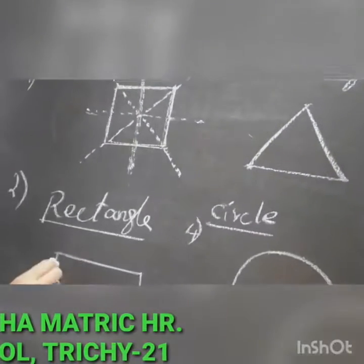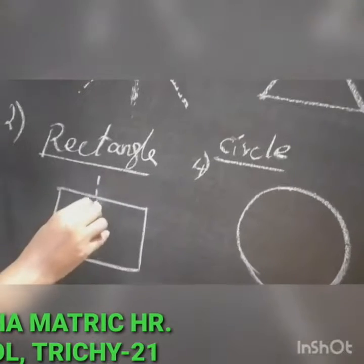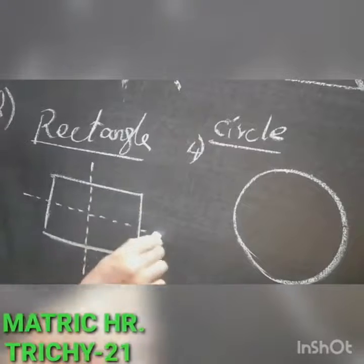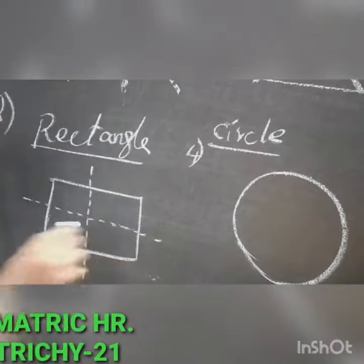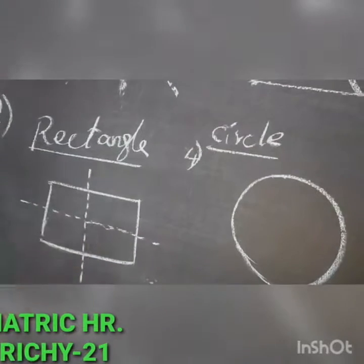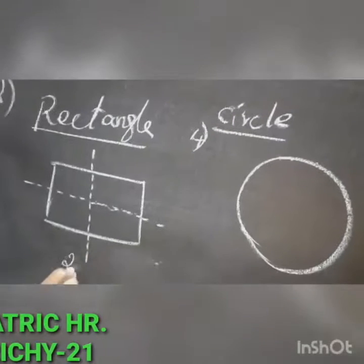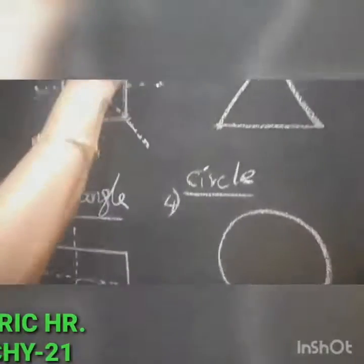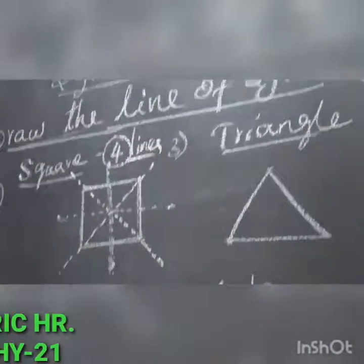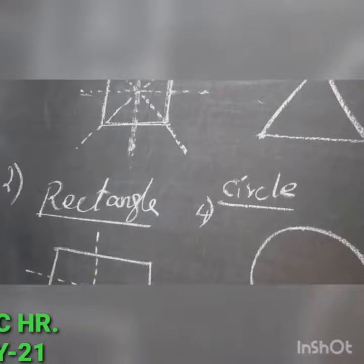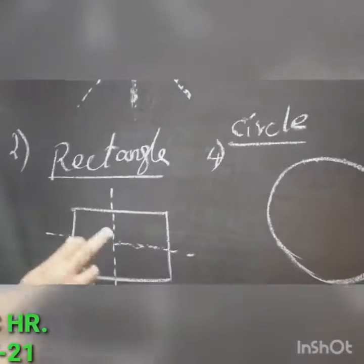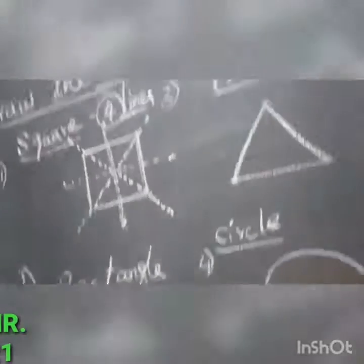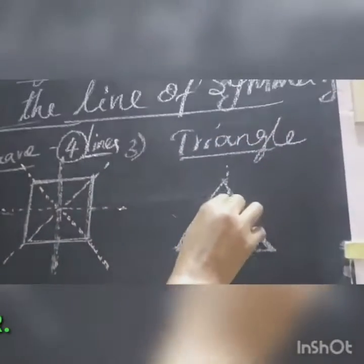Now let us take the rectangle shape. Here you can divide it into two halves. We have only vertical and horizontal lines of symmetry for a rectangle — so the rectangle has two lines of symmetry.